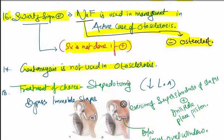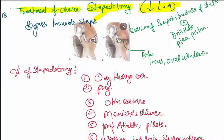Treatment of choice in otosclerosis is stapedotomy, usually performed under local anesthesia. Stapedotomy bypasses immobile stapes. Excision of superstructure of stapes is done, drilling a hole, and placing a piston. The piston is placed between incus and oval window.